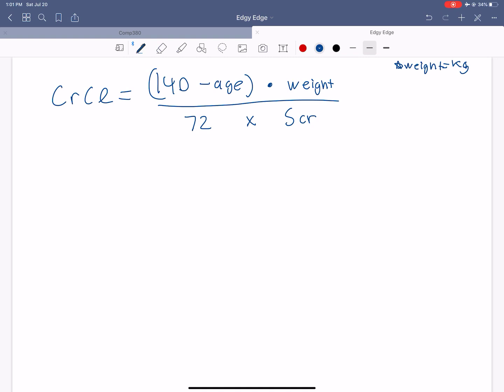And we'll talk about in detail what these variables are later or maybe in the next video. And if they're a female, you times 0.85 the entire formula, and that will give you the creatinine clearance, the estimated creatinine clearance.